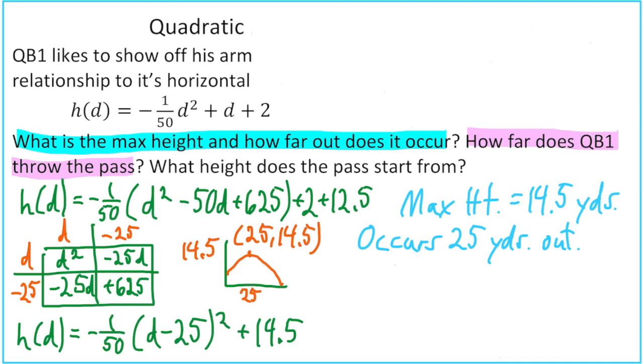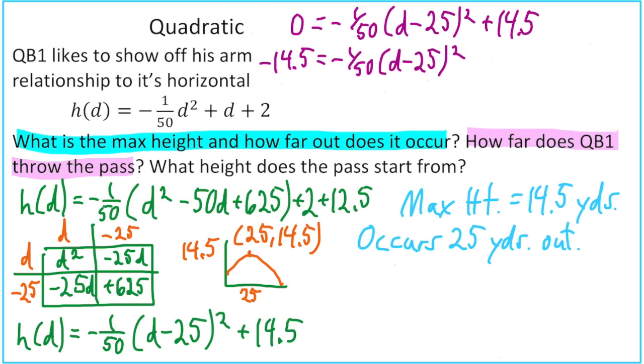So to go about solving this, we're just going to rewrite our vertex form, but we're going to let h of d equal zero. And now to solve this, I will move my positive 14.5 to the left side where it becomes negative. And then to get rid of multiplying by negative 1/50, remember that means divide by negative 50. So the opposite of divide by negative 50 is to multiply by negative 50. And when I do that to both sides, I'm left with 725 equals d minus 25 squared. Next I take the square root of both sides, and I get plus or minus radical 725 is equal to d minus 25.